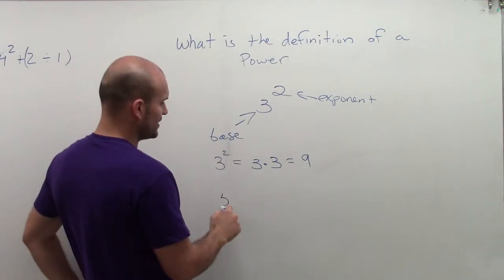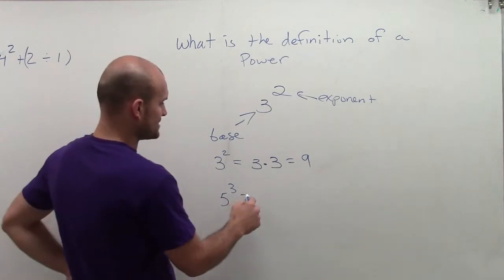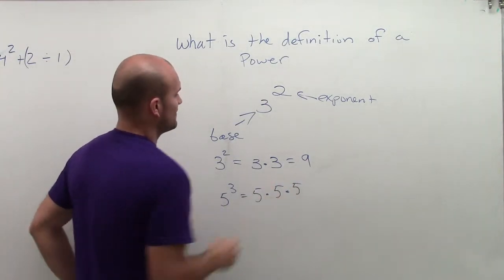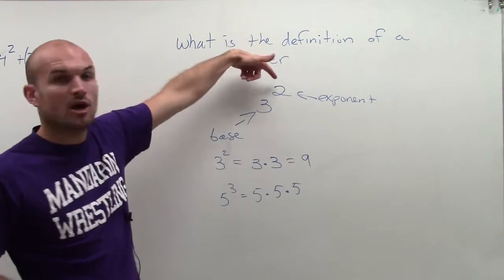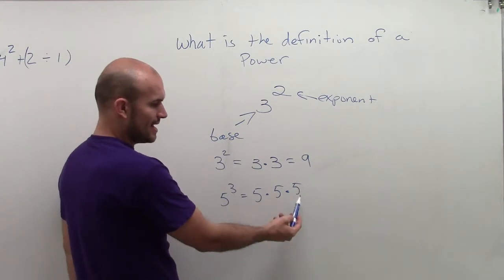And real quick, let's say I had 5 cubed. So that represents 5 times 5 times 5. So I use the same base multiplied by its exponent. It gives me my power. And when I simplify, I write it out.